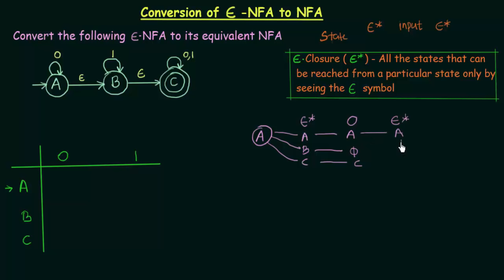Phi is nothing, and the Epsilon Closure of C is only C, since C goes only to C on Epsilon. So combining these, we obtain states A, B, C, and C — meaning states A, B, and C. These are the states to which state A goes on getting input 0 in our NFA. So here we write states A, B, and C.